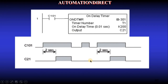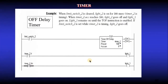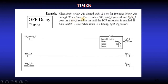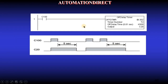Now let's look at the off-delay in Allen Bradley. When switch two goes from on to off (cleared), the timer starts timing and TT goes true, so light 2 becomes true. When the accumulated value reaches 180 it stops timing — light 2 goes off and light 3 turns on, staying on until the enable signal is active again.